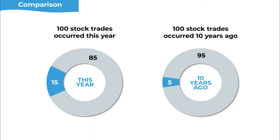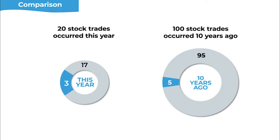If there were 100 stock trades this year and 15% involve fraud, that's 15 trades with fraud. If 10 years ago there were also 100 stock trades and 5% involved fraud, that's 5 trades — so yes, there would be more fraud this year. But we could adjust things so the conclusion doesn't follow. Suppose we keep 100 stock trades 10 years ago at 5%, giving us 5 fraudulent trades, but this year only 20 stock trades occur. If 15% of those 20 involve fraud, that's only 3 fraudulent trades — so 15% can actually be a smaller amount depending on the overall size of the group.